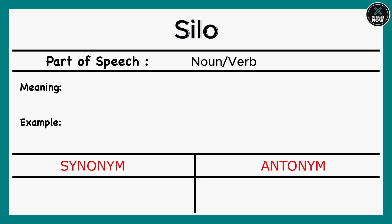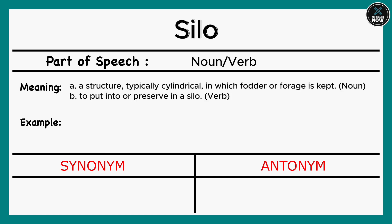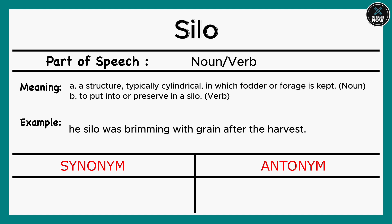Silo: A. A structure, typically cylindrical, in which fodder or forage is kept (Noun). B. To put into or preserve in a silo (Verb). Example: The silo was brimming with grain after the harvest. Synonyms: Barn, Granary, Repository.